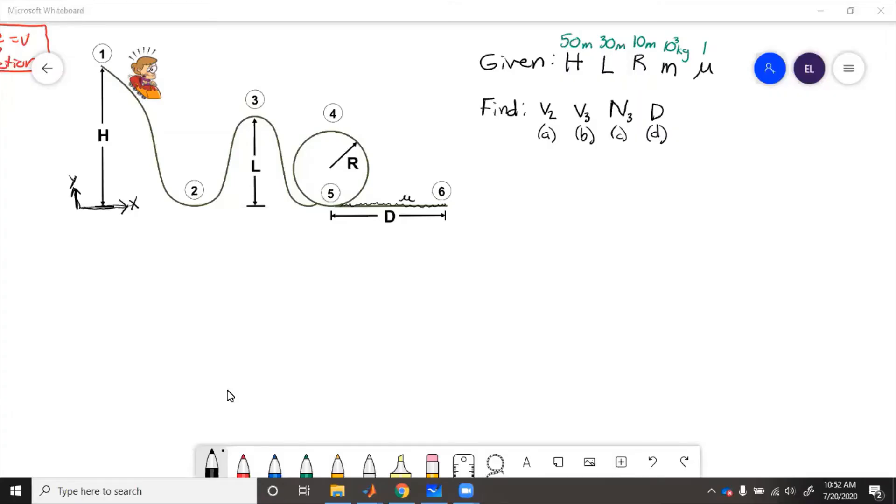In this problem, we have a roller coaster. The car starts up at the top at state one, goes down the hill to state two, over the next hill to state three, rounds the loop from four to five, and then it comes to stop at six.